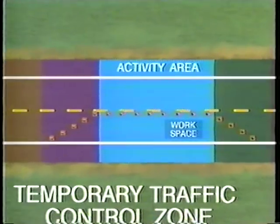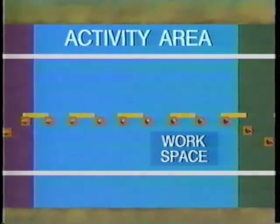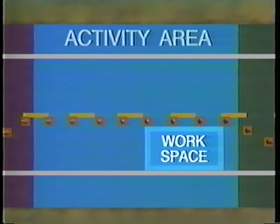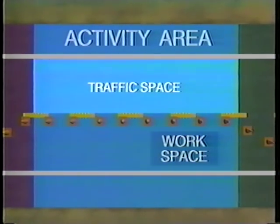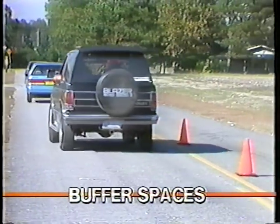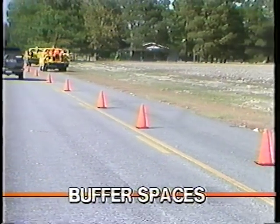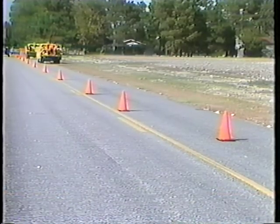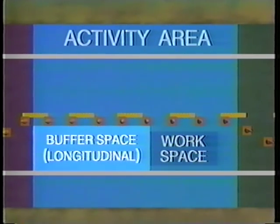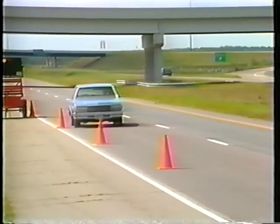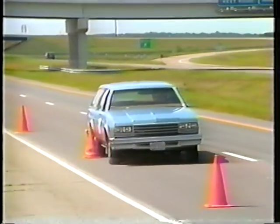The activity area consists of four distinct spaces: the longitudinal and lateral buffer spaces, the work space, and the traffic space. Buffer spaces are open and unoccupied spaces and provide a margin of safety for traffic and workers. Although they are optional, they should be provided whenever field conditions permit their use. The longitudinal buffer space is between the transition area and the work space, and provides room for the driver to stop his vehicle if he fails to negotiate the transition taper and before he enters the actual work space.